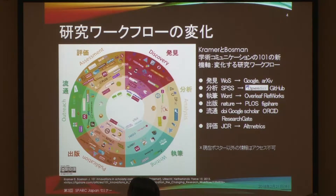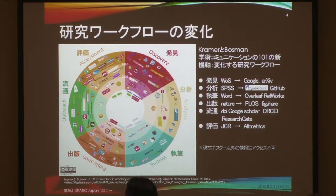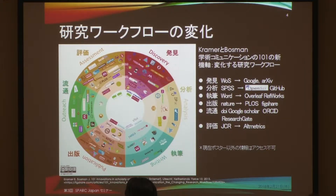For writing, of course Word is predominant, but some people have already started using Overleaf or RefWorks. For publication, from traditional journals like Nature, PLOS and Figshare are now being used to share articles. For outreach, DOI and Google Scholar help with this work — outreach and discovery are two sides of the same coin, and we can get information through these channels.